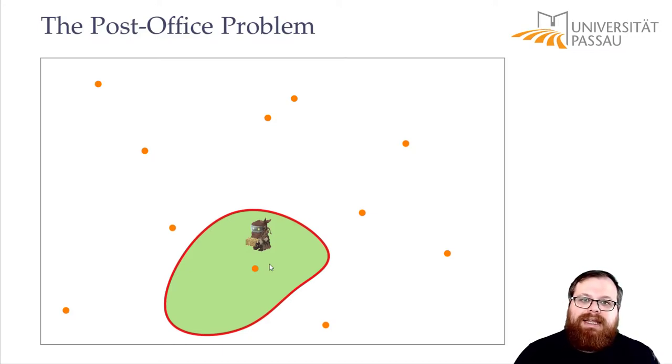And to decide that what we can do is we can preprocess the whole map and we can find out for every point beforehand what is the closest post office. So we can divide the map into regions where every region knows what is the closest post office. Then you only have to figure out in which region you are.